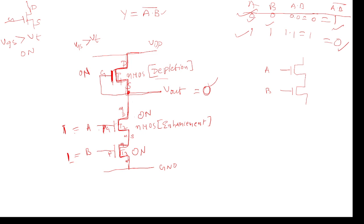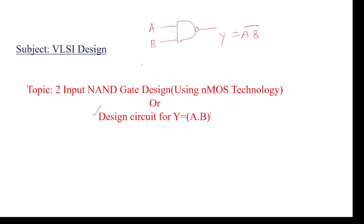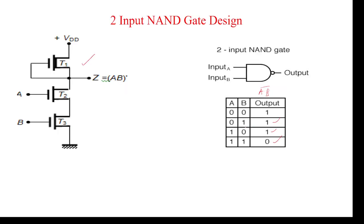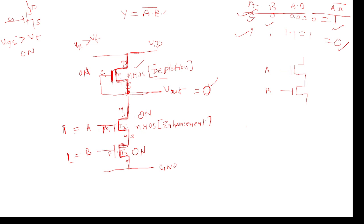Similarly, the remaining two input combinations also give the required output. This circuit uses NMOS enhancement-mode transistors for the pull-down network and an NMOS depletion-mode transistor for pull-up — that is why it is called NMOS technology. In CMOS technology, PMOS transistors are used for pull-up. If three inputs are needed (A·B·C)', we simply add three transistors in series in the pull-down network. Like this, any number of inputs can be designed using NMOS technology.